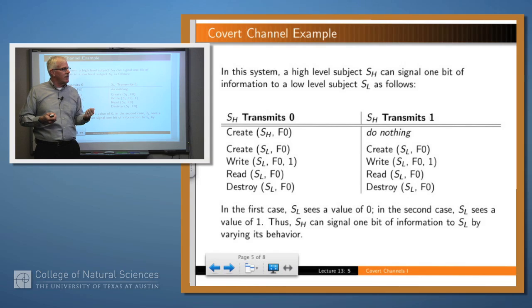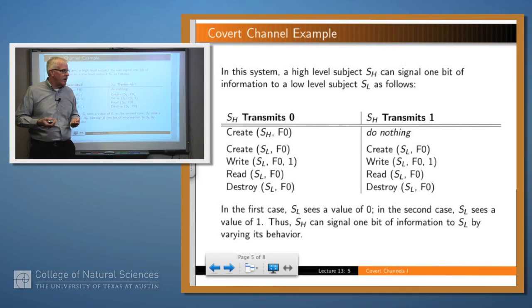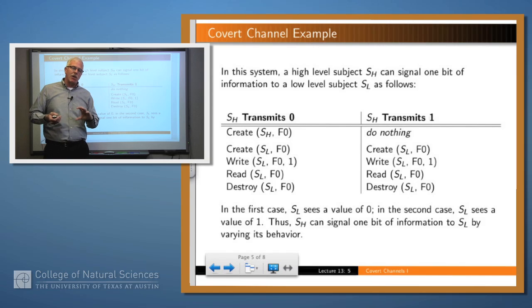But now we have this simple system with four operations: read, write, create, and destroy. So imagine that we write a couple of programs. In the program on the left, a high-level subject SH creates an object with name F0. And then a low-level subject SL tries to create an object with that same name. That's going to fail because we can't create an object if an existing object already has that name. And so the low-level subject tries to write to that object and that succeeds because there's an existing high-level object and he can write up. So he writes a 1 to it. But then he tries to read that object and the read fails because the object is not accessible for him to read. So he gets back a 0, which is the semantics of the read operation.